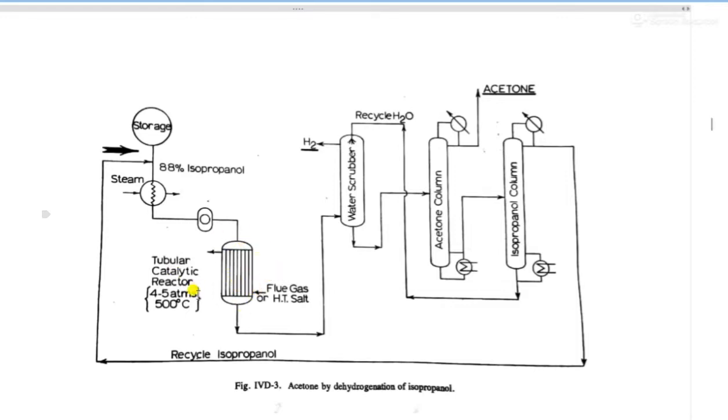The temperature of reactor is maintained about 500 degree Celsius and 4 to 5 atm. Flue gas is passed on the shell side of the reactor for heat exchanging. Now, the acetone formed and the unreacted isopropanol is sent and absorbed in the water scrubber.